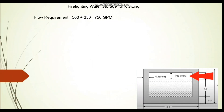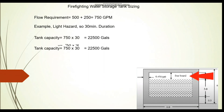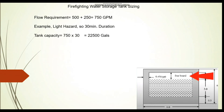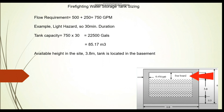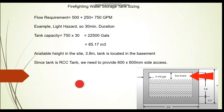For our project with a standpipe system classified as light hazard, the fire pump flow is 750 GPM. Using the 30-minute duration from the NFPA 13 table, the tank capacity equals 750 GPM multiplied by 30 minutes, giving 22,500 gallons. Converting to cubic meters, we get 85.17 m³. The tank is located in the basement with an available height of 3.8 meters.